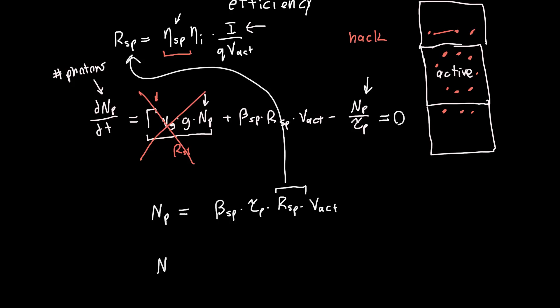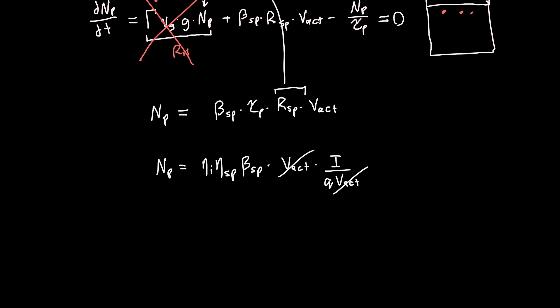So we can plug that in here. And we get the total number of photons in our cavity. So I'm going to put all the efficiencies out front. So eta i, eta spontaneous. And you can think of beta spontaneous as an efficiency as well. It's like the fraction of photons we're able to inject into the mode. And then this is, now we've got an active region volume from the original N_p, and then an i over q times the active region volume. And that's nice. Our active region volumes cancel. And so we've got our final equation. Let's just erase those for our photon, our total number of photons in the cavity. Oh, and it looks like I left out a tau p here. There we go. There you are.